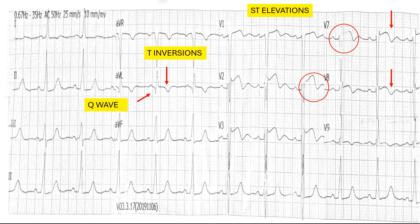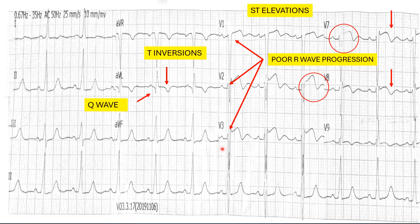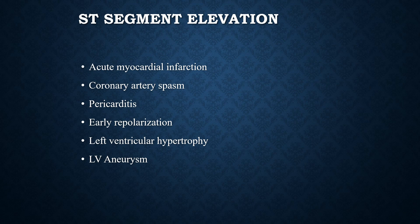In addition to these findings, we can also see some findings that are very important and should not be missed — these are poor R wave progression. In normal healthy individuals, the R wave progresses from V1 to V6 in a healthy way, but here we cannot see a healthy R wave up till V3 and even further. This means there is some effect on the myocardium. Poor R wave progression is a very important parameter, especially when considering ischemic events.